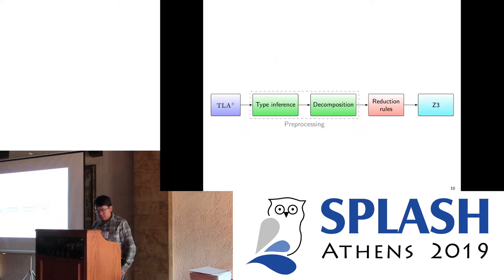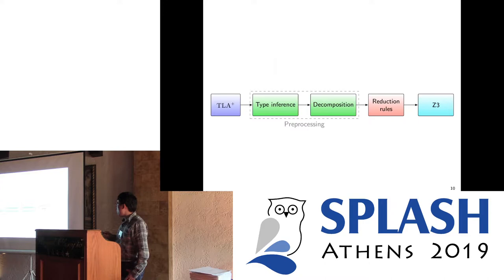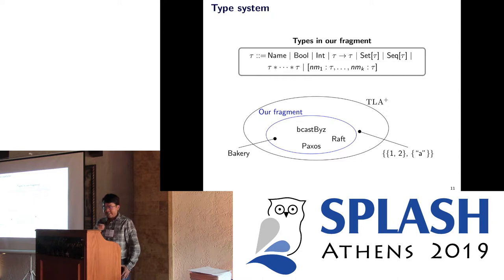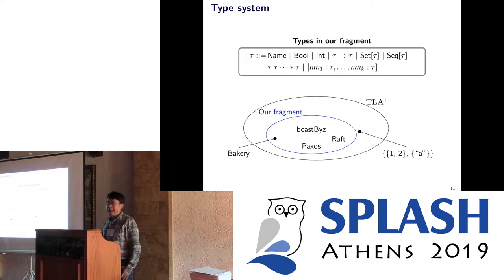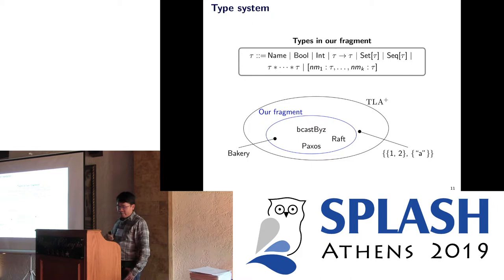For example, the empty set, function update, and set union are not supported in SMT. Now I will show you how we solve this problem. Here is the workflow with three parts — each part addresses one issue. The first is the type problem. Since TLA+ is untyped, the first thing we need to do is define a type system for the language.